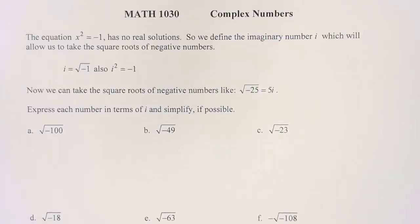Now we're going to look at complex numbers. The equation x squared equals negative 1 has no real solutions. So we define the imaginary number i, which will allow us to take the square roots of negative numbers.